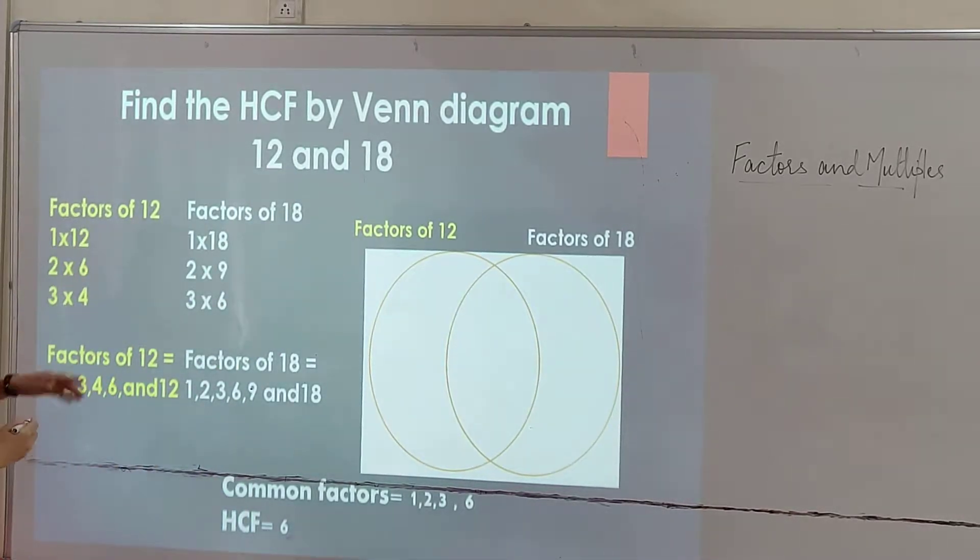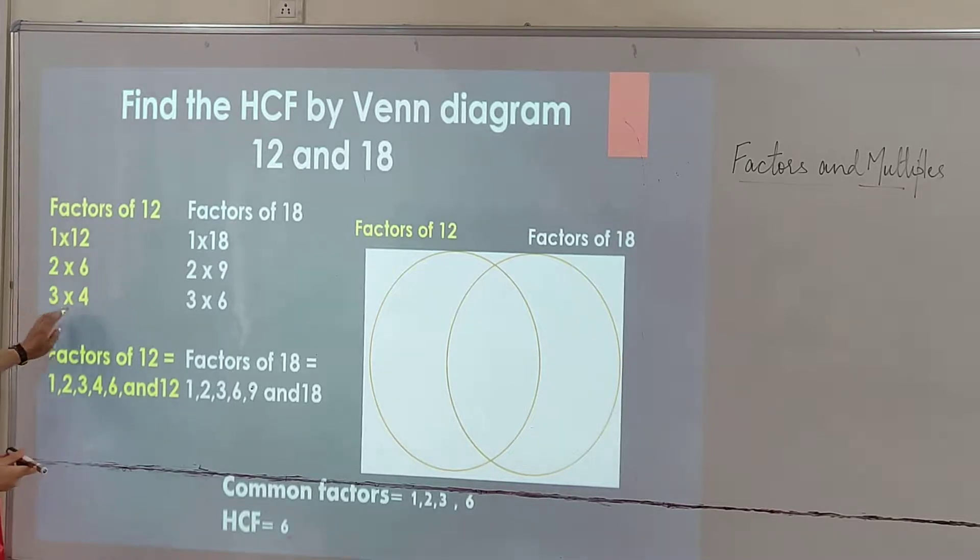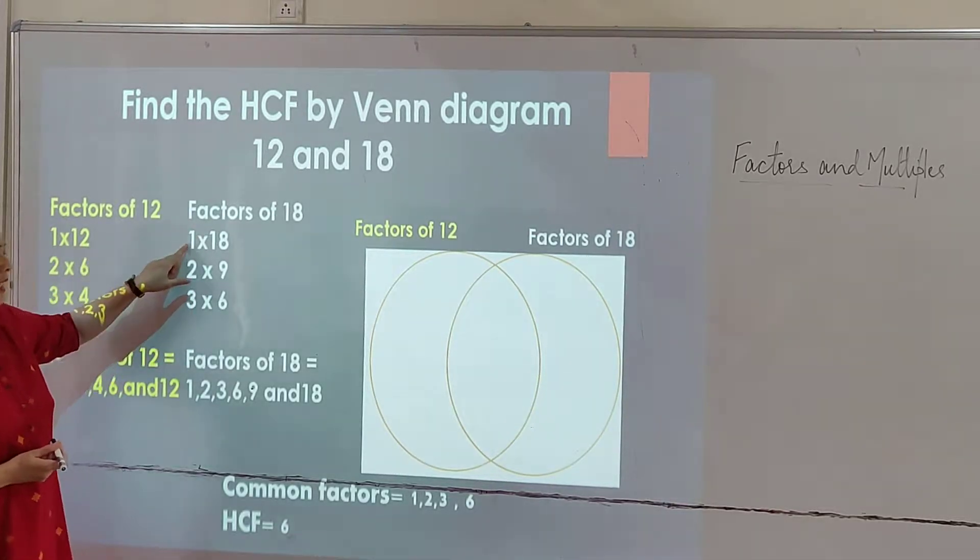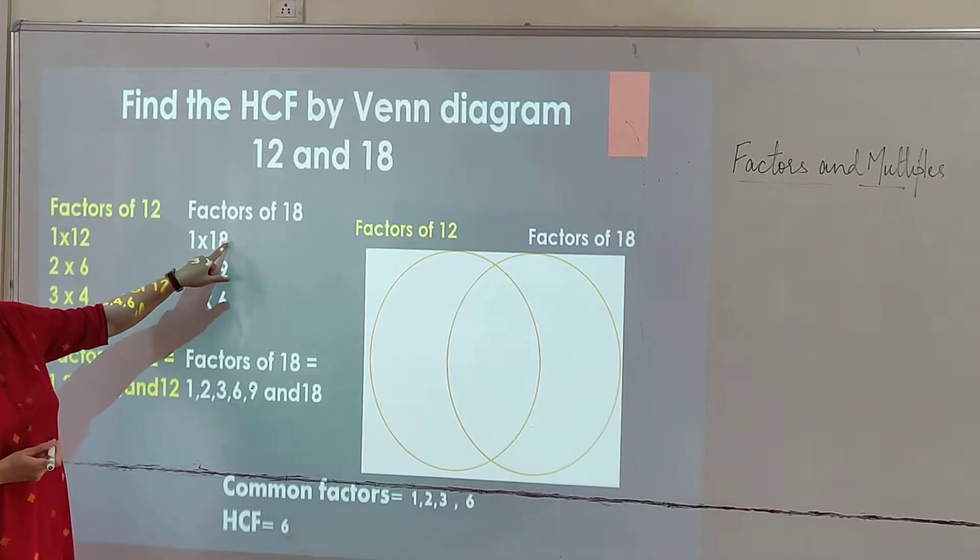Factors of 12 are 1, 2, 3, 4, 6, and 12. Factors of 18 are 1, 2, 3, 6, 9, and 18.